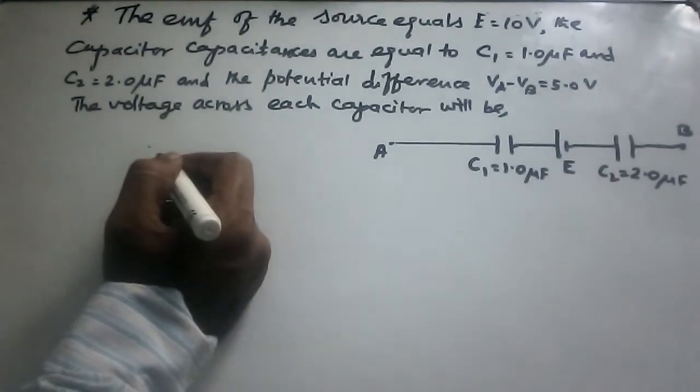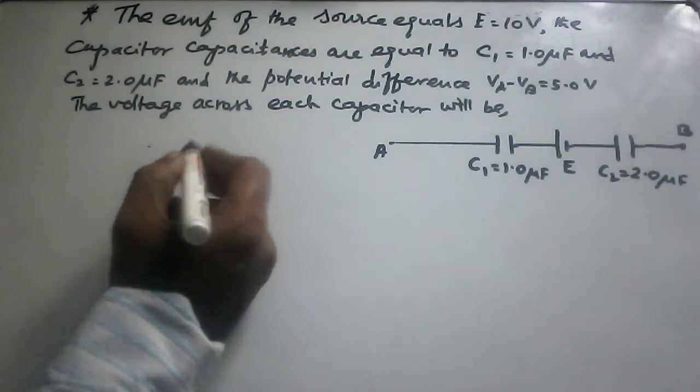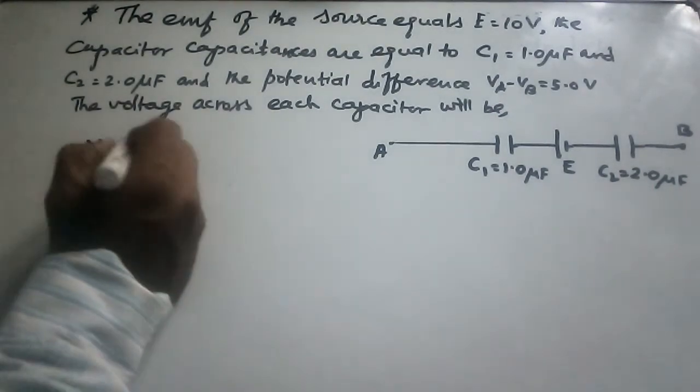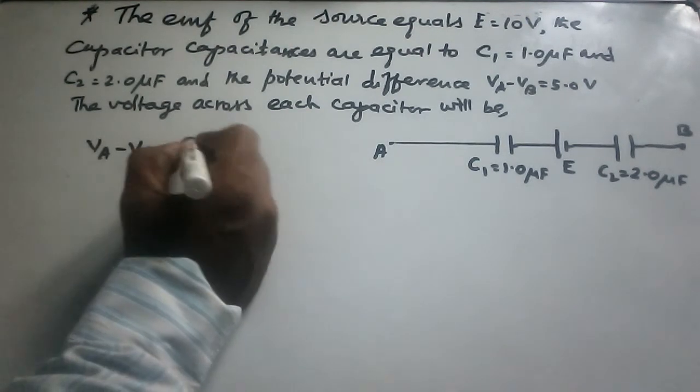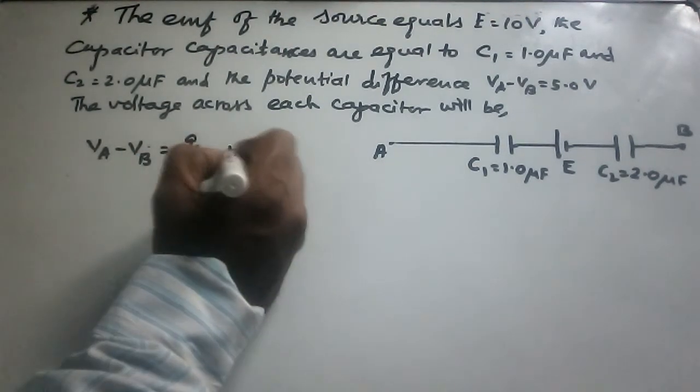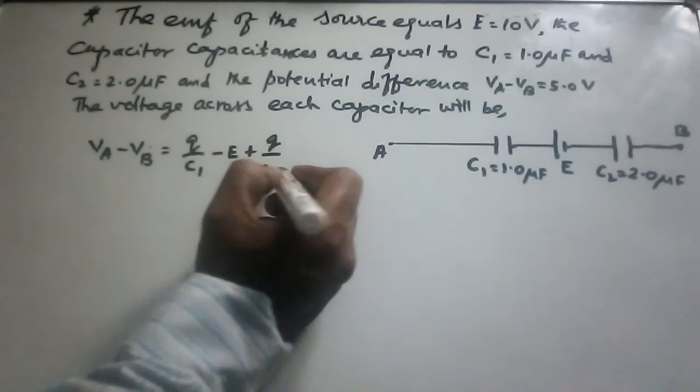Let the charge distribution be as shown in the figure. VA minus VB, that is the voltage across terminals A and B, is Q/C1 minus E plus Q/C2.